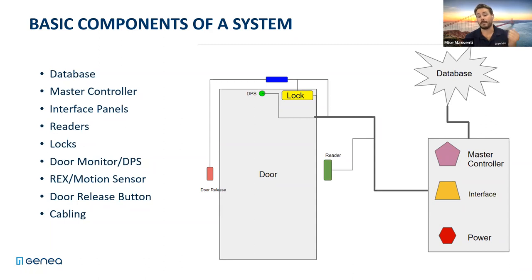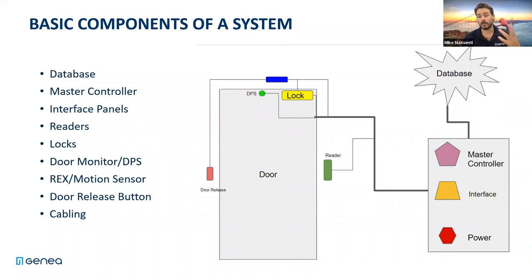Then you have what's called the head end location. There are cables that run from the door to the head end. At the head end side of the system you've got basically four main components: the enclosure that everything sits in, the master controller or main controller - this is what connects to the database via the cloud or on a local network - and then the interface panel. The interface panel is really where the door equipment connects to the access control system, passing data back and forth between the controller, database, and the door.